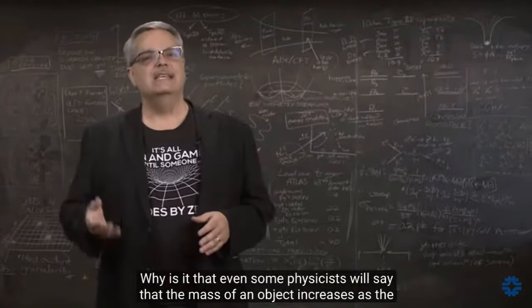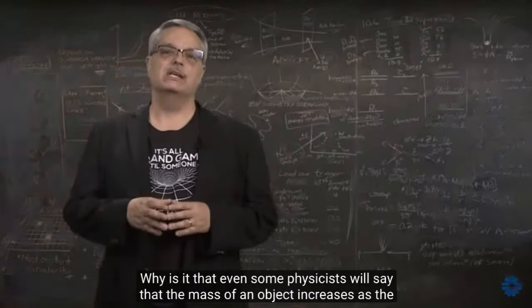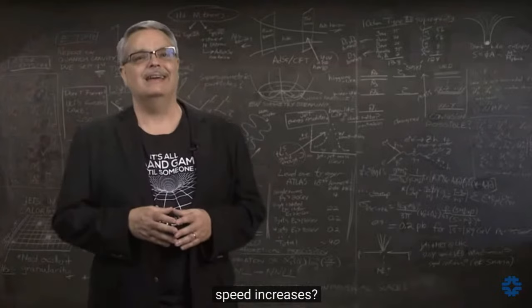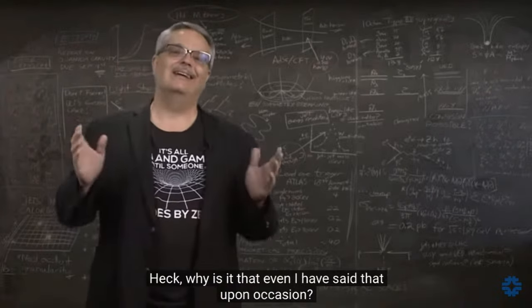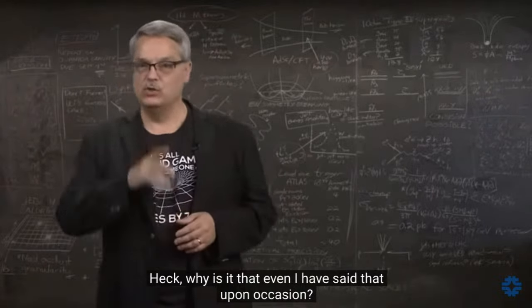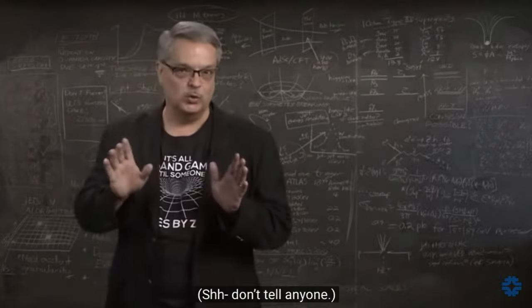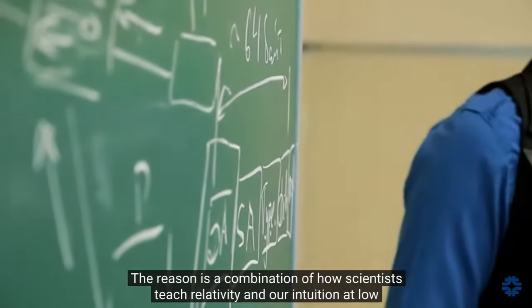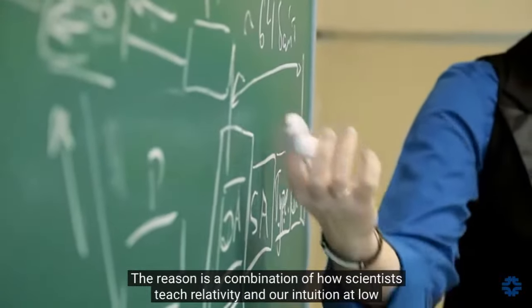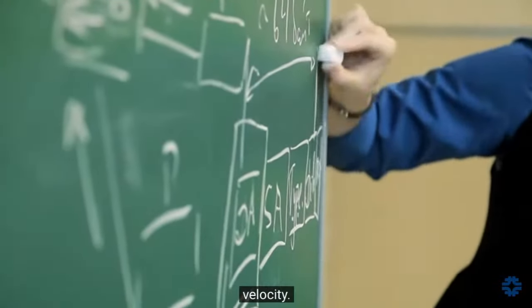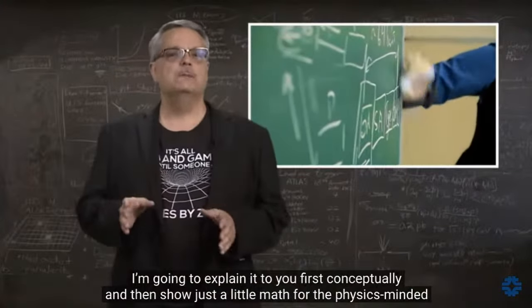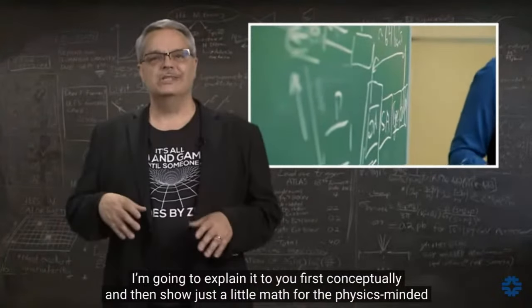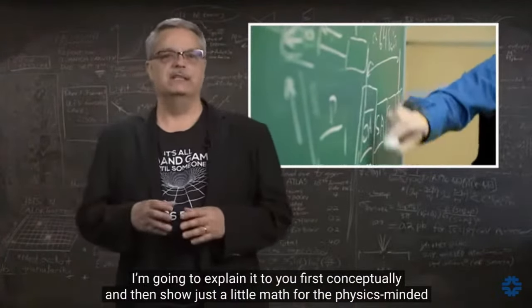Why is it that even some physicists will say that the mass of an object increases as the speed increases? And why is it that even I have said that upon occasion? The reason is a combination of how scientists teach relativity and our intuition at low velocity. I'm going to explain it conceptually, and then show just a little math for the physics-minded viewer.